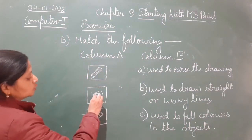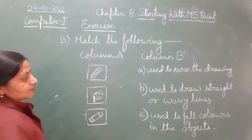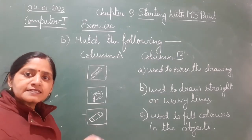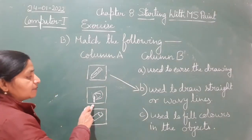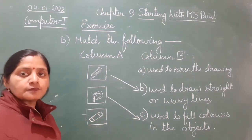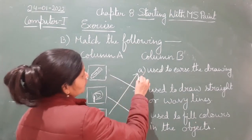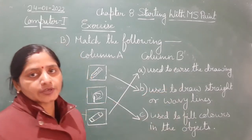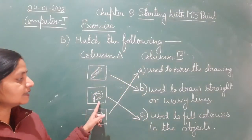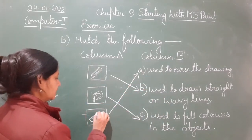So these tools are used for drawing and coloring. Pencil is used to draw straight or wavy lines. Fill color — if you have drawn any object and you want to color it, you will use fill color. Eraser — if you have made something wrong and want to rub it out, you will use the eraser. So: pencil — used to draw straight or wavy lines; fill color — used to fill colors in the object; eraser — used to erase the drawing.